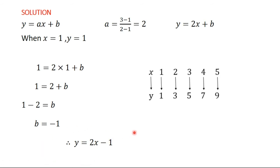With this rule, we can find any element in the domain and any element in the codomain. So if x is 5, you replace x with 5: 2 times 5 minus 1 = 10 minus 1 = 9, which is the corresponding image. If the question tells you to find y when x is 20, replace x with 20. If the question tells you to find x when y is 15, replace y with 15 and solve for x.